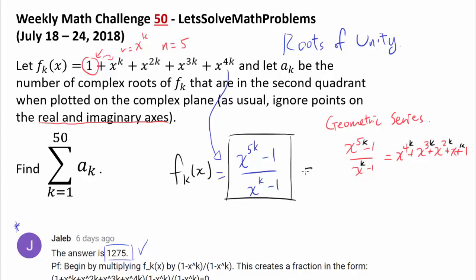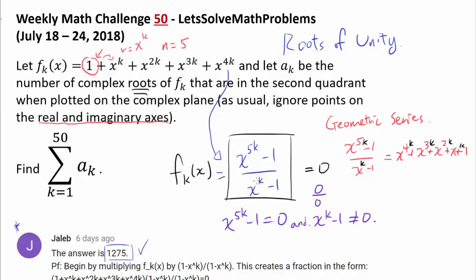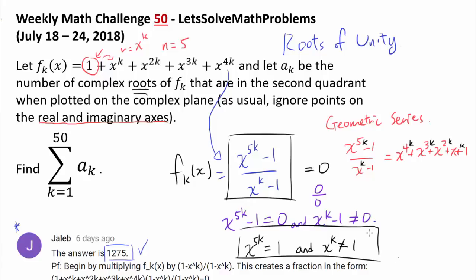You want f sub k of x to be 0 because you're looking at complex roots. A fraction is 0 when the numerator is 0, but we have to realize 0 over 0 is undefined — so even though the top is 0, we cannot have the bottom being 0. So x to the k minus 1 cannot be 0. This condition is precisely: x to the 5k equals 1, and x to the k is not equal to 1. And this is why I was saying we are probably going to have a roots of unity problem, because these expressions have an intimate connection with roots of unity.